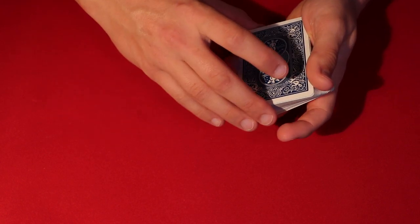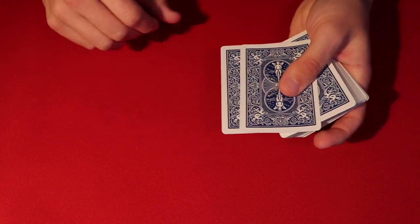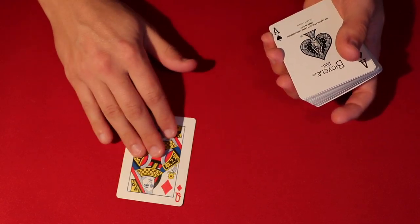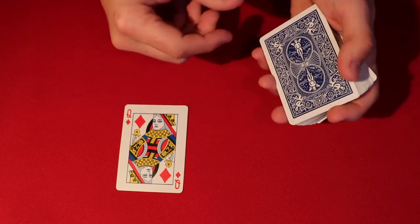Here's what it's gonna look like. The way you start the trick is by showing your spectator you're gonna be using two cards. We have the Queen of Diamonds as well as the Ace of Spades.